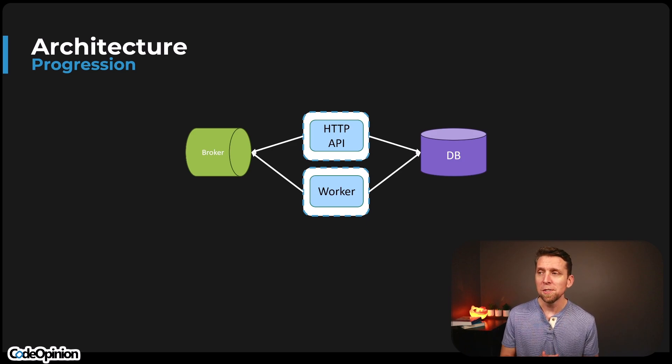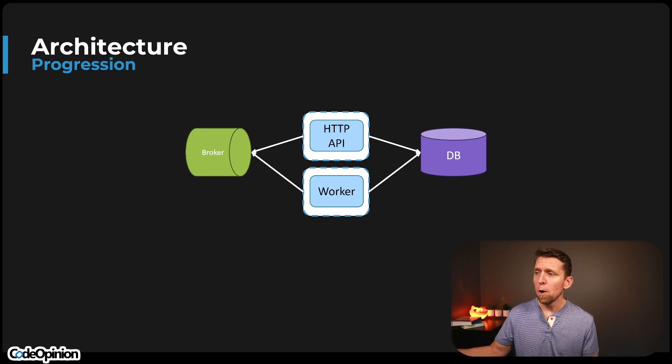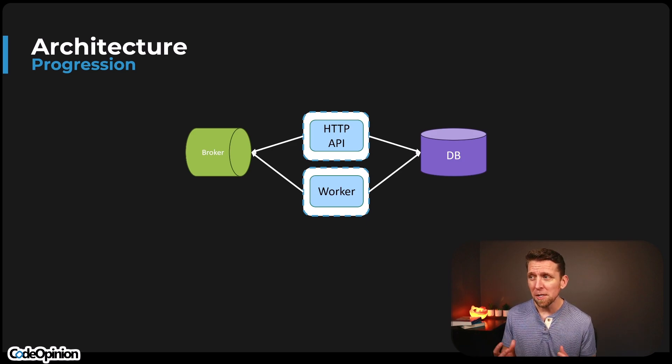They're two separate processes. So our HTTP API might add some messages to our broker, and the worker consumes those. So far, we have two separate processes interacting with a single broker and a single database. It's worth pointing out that the HTTP API and the worker are actually the same underlying codebase — they're just different entry points. They can be scaled differently and are their own process or container, but at the heart of it, they're just different entry points from the same codebase.